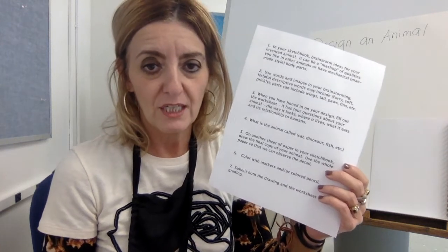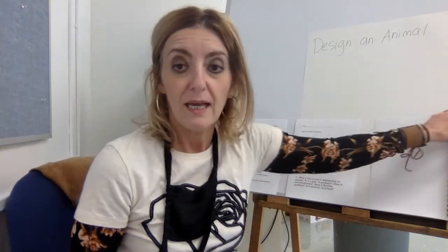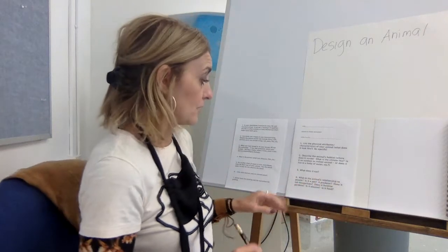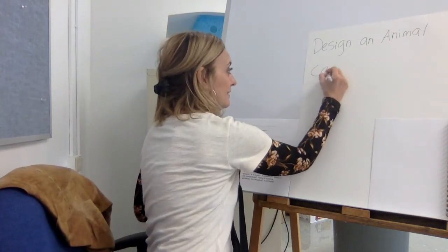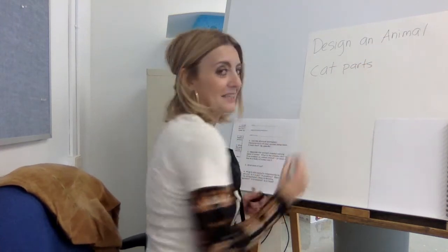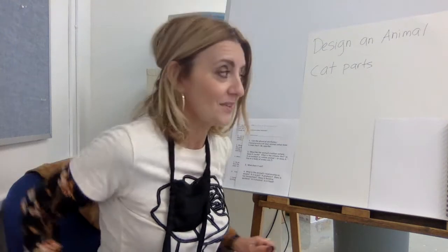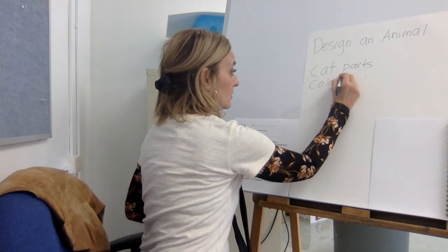Once you've honed in on your design, you'll fill out a worksheet and title the animal. Then in your sketchbook you'll start drawing the idea. So right now I'm going to brainstorm — I like cat parts, so I'm looking for beautiful big round eyes. I also really like colorful birds, so I'll put that down.